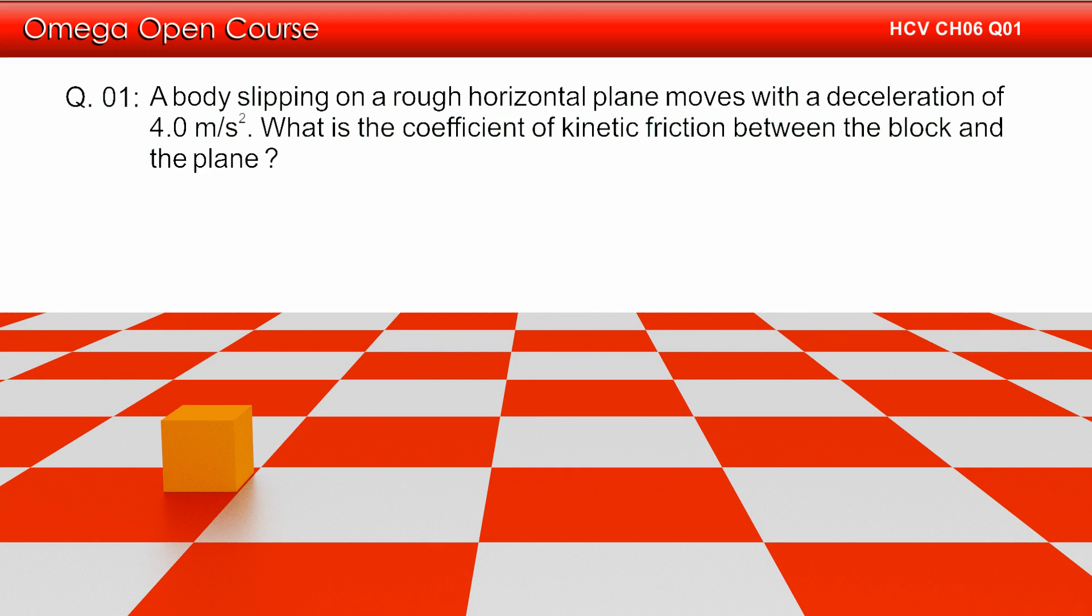A body slipping on a rough horizontal plane moves with an acceleration of 4 m per second square. What is the coefficient of kinetic friction between the block and the plane?